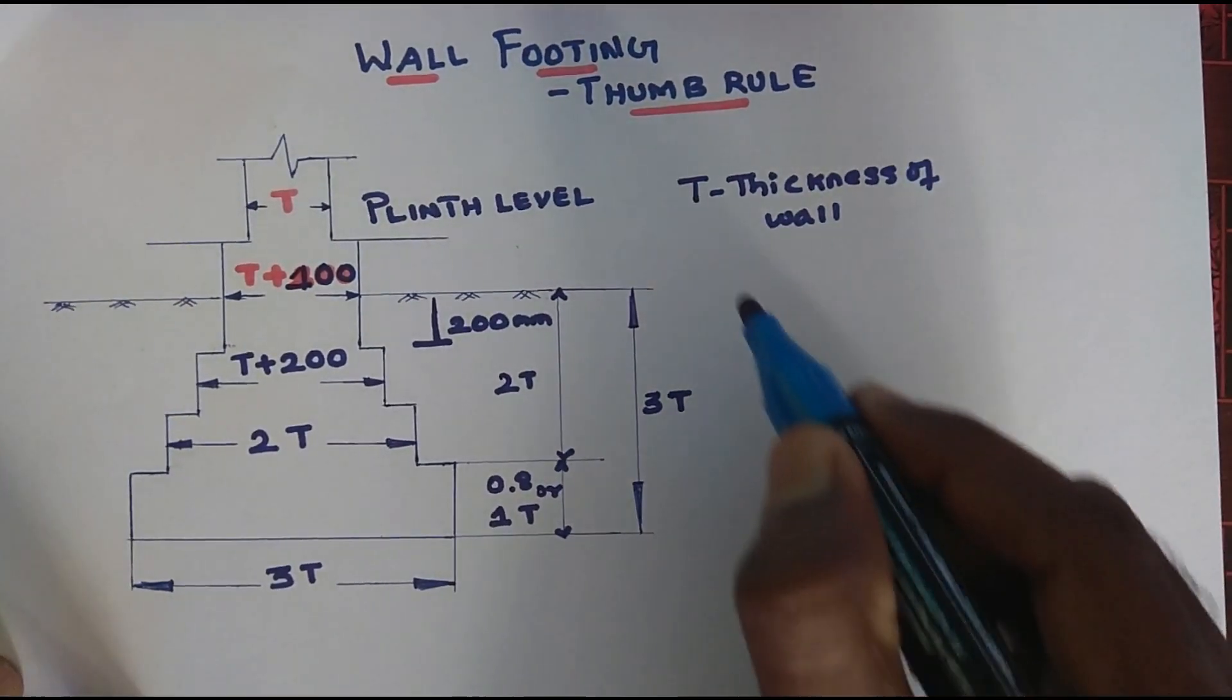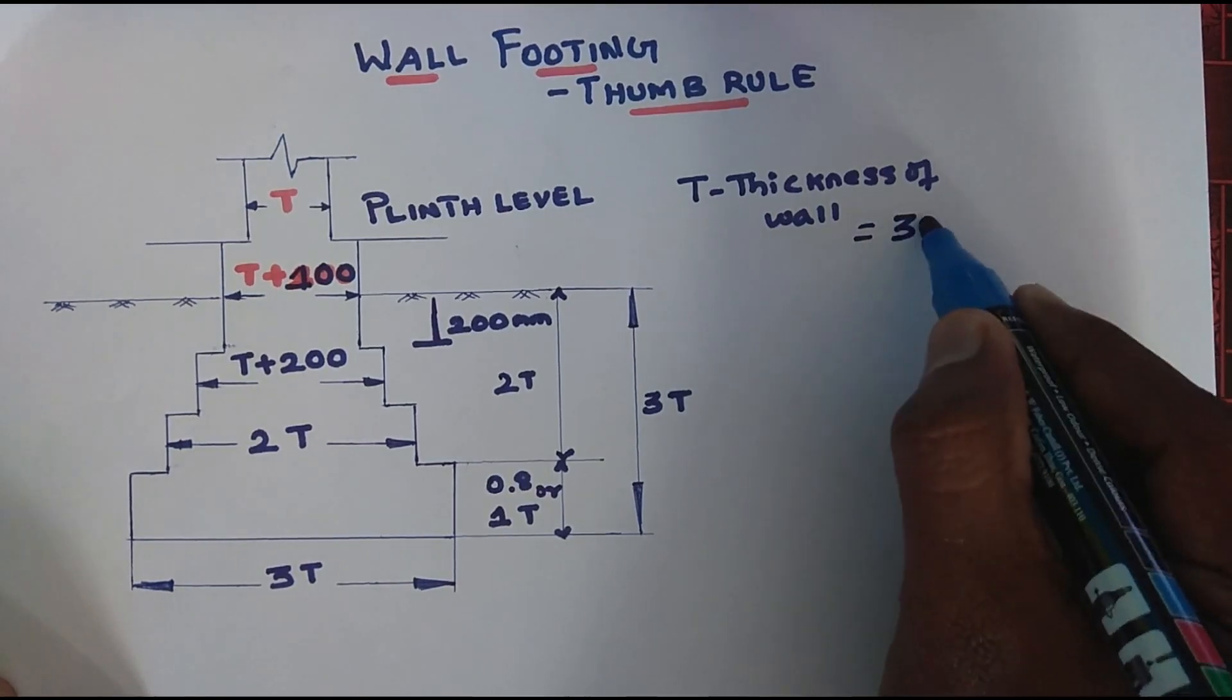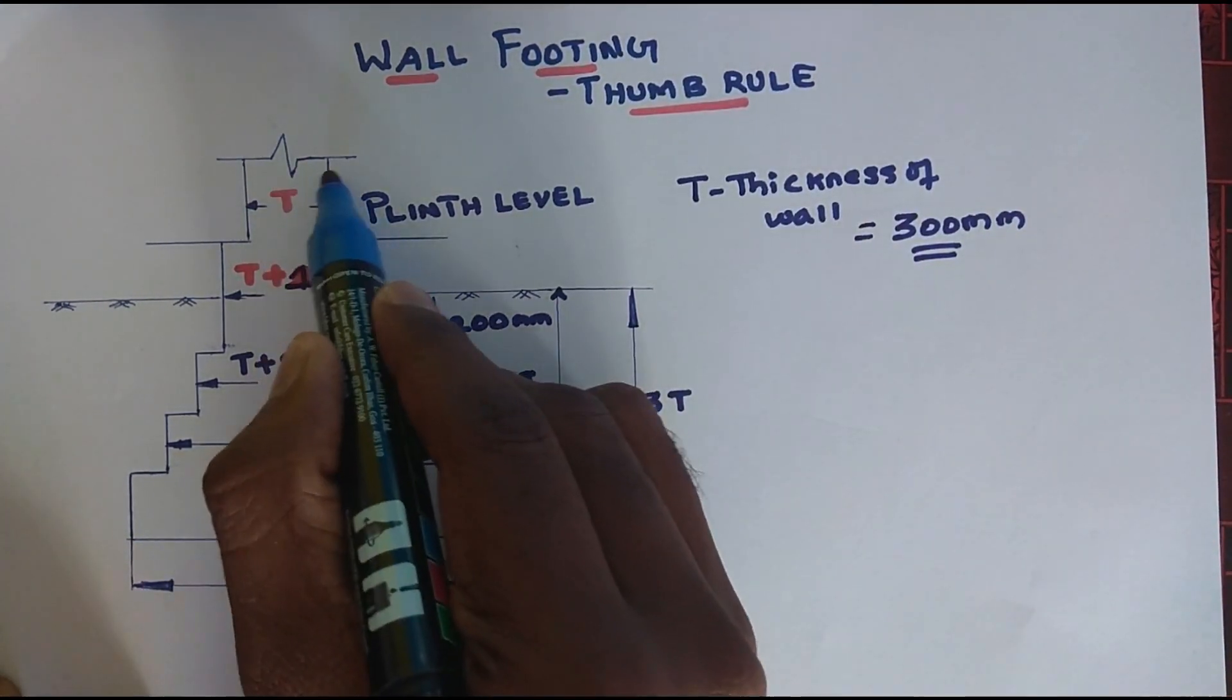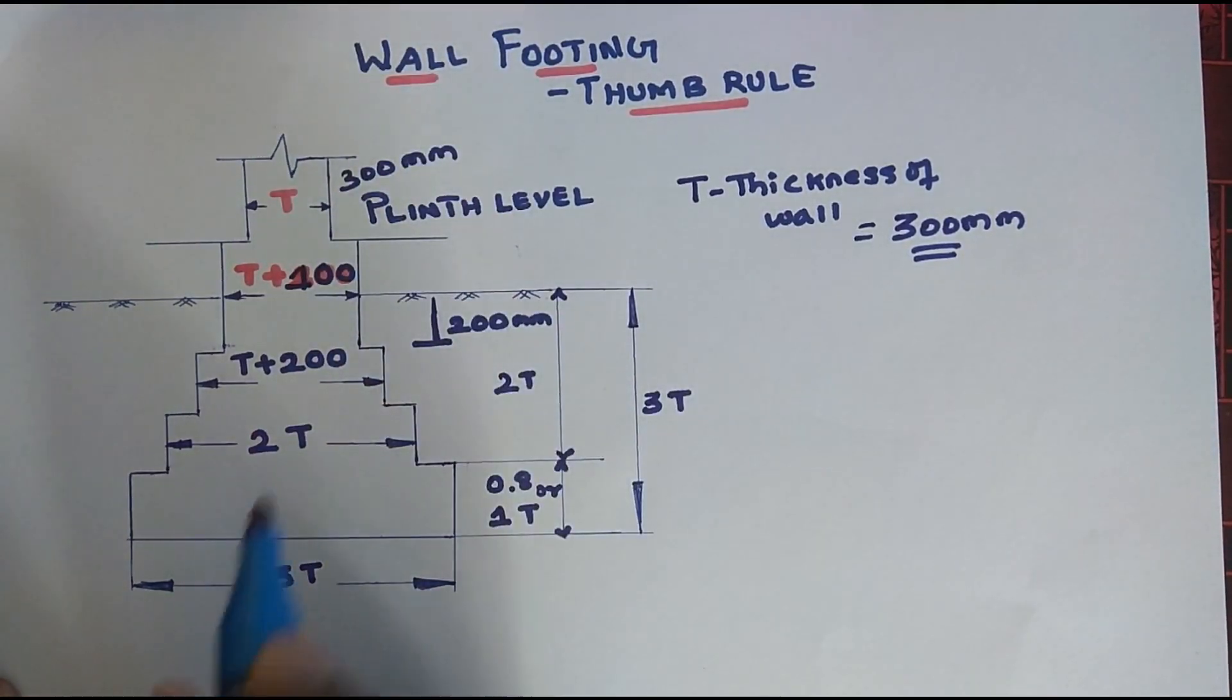The height, the thickness is 300mm. Three times thickness of wall: multiply 3 into 100 equals 900mm.